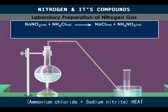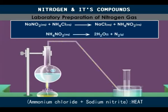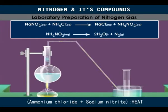Ammonium nitrite is unstable and decomposes on heating, giving out nitrogen gas. Ammonium nitrite is very unstable and decomposes even at room temperature. For this reason, it cannot be stored. This explains why it has to be prepared fresh by reacting sodium nitrite and ammonium chloride.